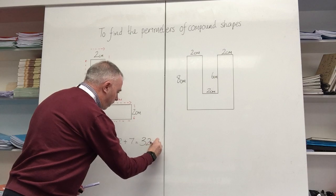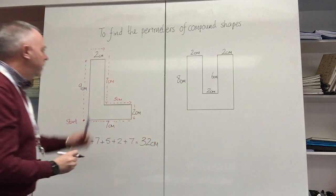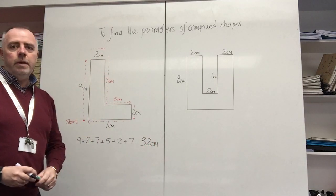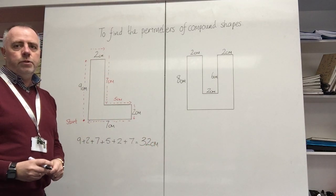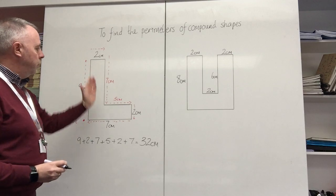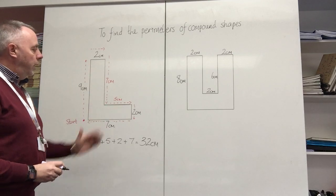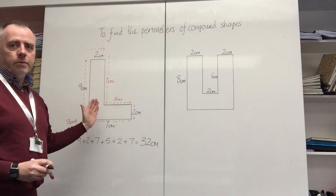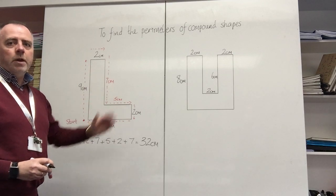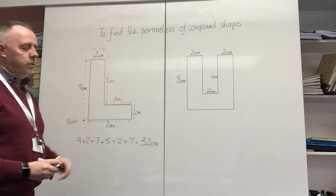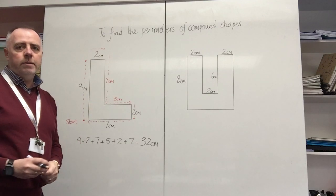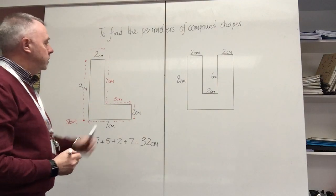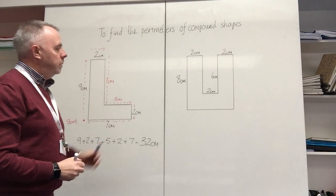So the perimeter of this L shape is 32 centimeters, and I've proved that by using some of the information I was given to help me work out the information I didn't yet know.